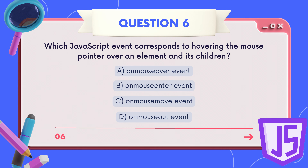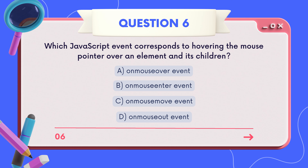Which JavaScript event corresponds to hovering the mouse pointer over an element or its children? A) onmouseover event, B) onmouseenter event, C) onmousemove event, D) onmouseout event.